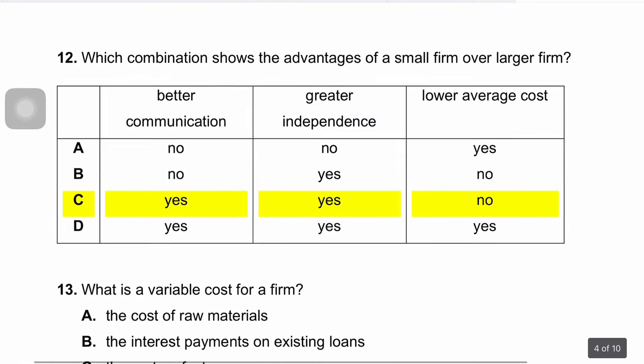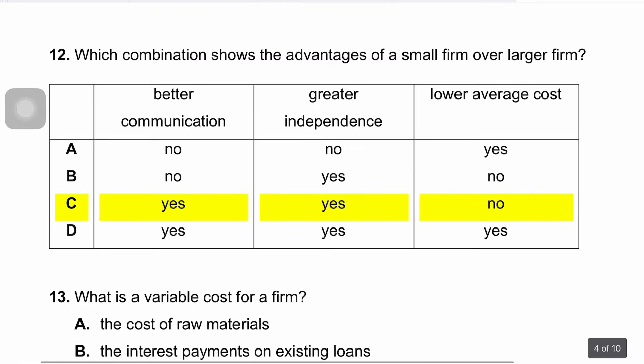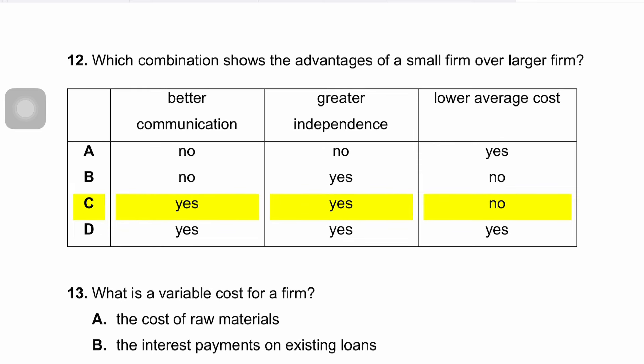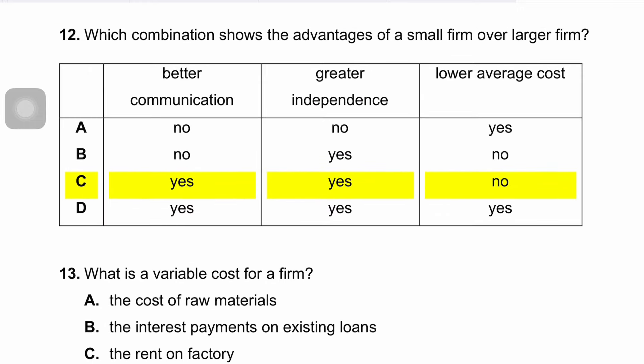Question twelve asks which combination shows the advantages of a small firm over a large firm. The correct answer is C. Small firms benefit from better communication due to fewer layers of management and greater independence with more flexibility in operations. However, they do not benefit from lower average cost, which is a feature of large firms that enjoy economies of scale.